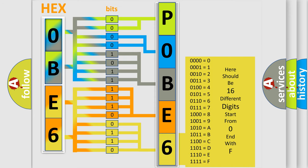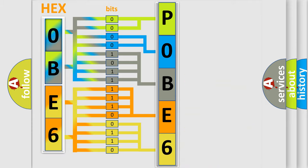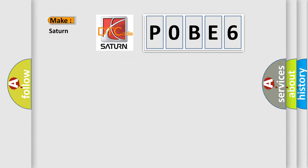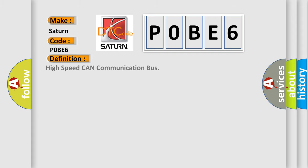We now know in what way the diagnostic tool translates the received information into a more comprehensible format. The number itself does not make sense to us if we cannot assign information about what it actually expresses. So, what does the diagnostic trouble code P0BE6 interpret specifically for Saturn car manufacturers? The basic definition is: high speed CAN communication bus.